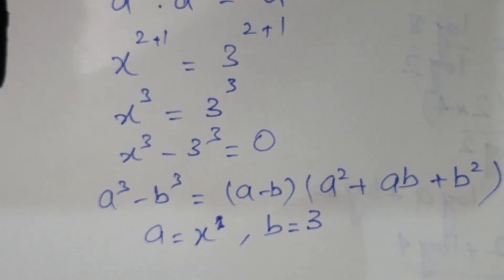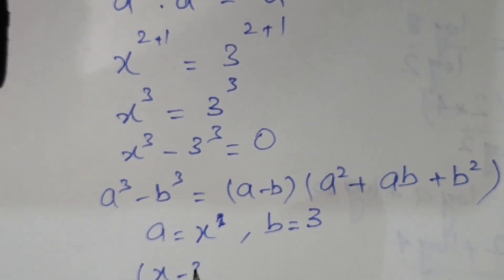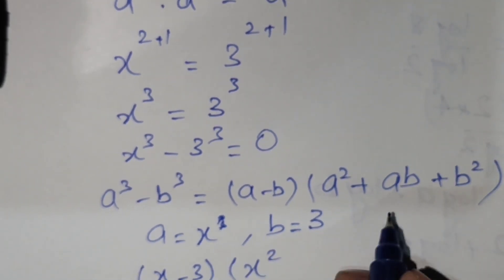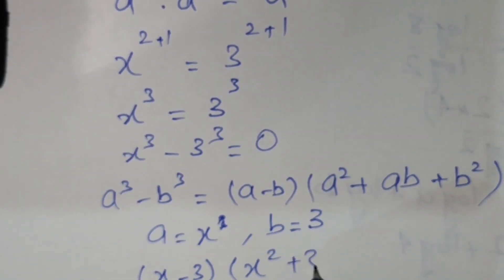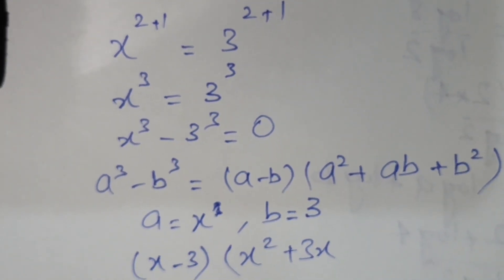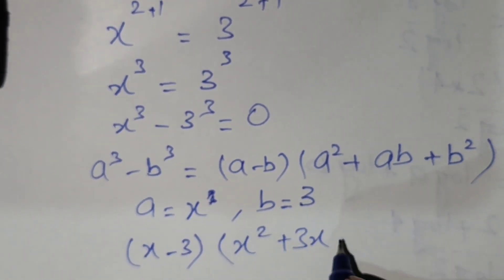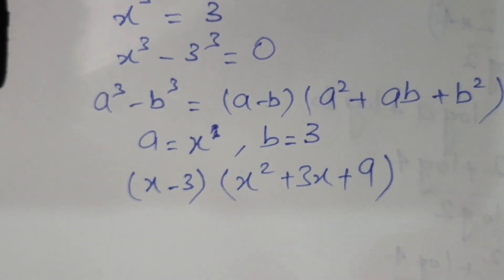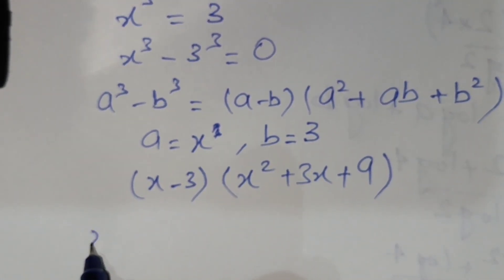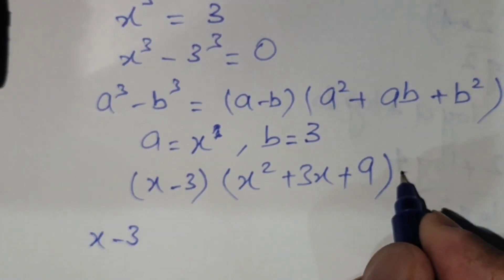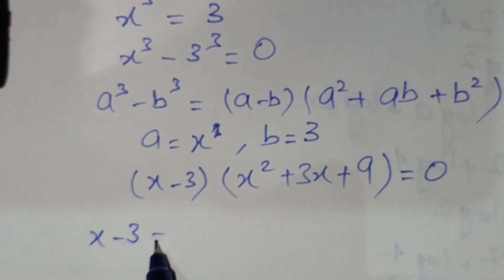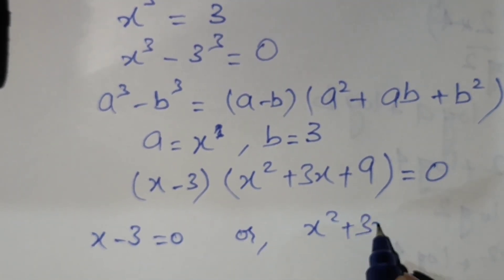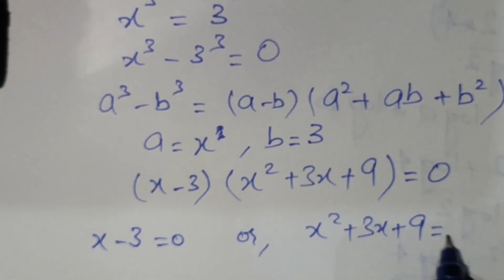So we have (x minus 3) times (x squared plus x times 3 plus 3 squared), which gives (x minus 3)(x squared plus 3x plus 9) equals 0. Either x minus 3 equals 0, or x squared plus 3x plus 9 equals 0.